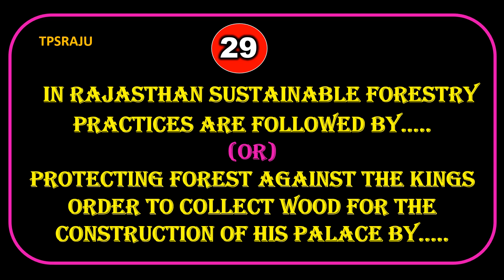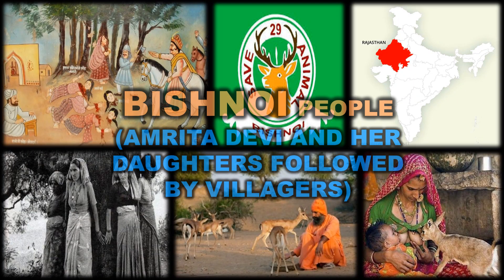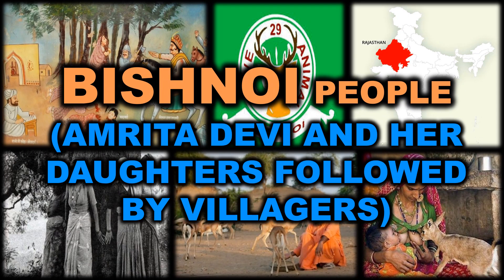In Rajasthan, sustainable forestry practices are followed by the Bishnoi people, who protected the forest against the king's order to collect wood for the construction of his palace. This was led mainly by Amrita Devi and her daughters, followed by the villagers.